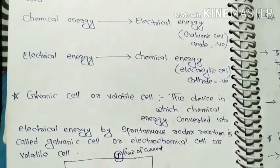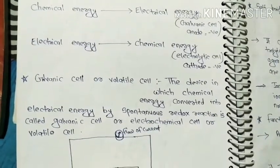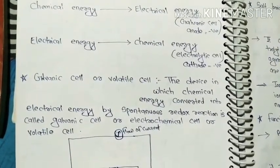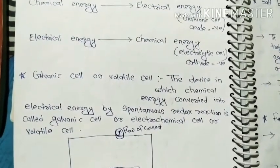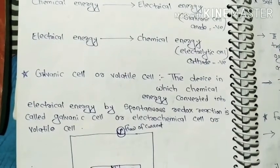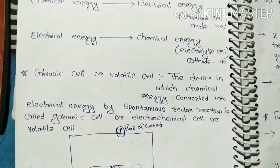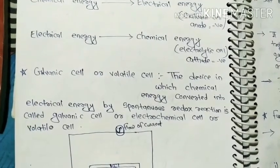Galvanic cell and volatile cell we will read first. Galvanic cell converts chemical energy into electrical energy. Let's see what happens here. The device in which chemical energy is converted into electrical energy by spontaneous redox reaction. It is called galvanic cell and electrochemical cell and volatile cell.